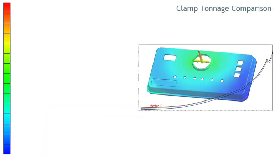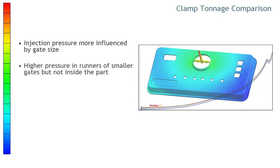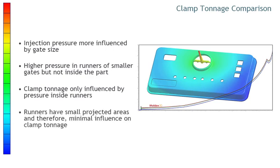Why are we seeing this behavior? Injection pressure behavior for the three examples is more influenced by gate size. The pressure in the runner is much higher inside the smaller gates, but not inside the part. If the pressure during filling is not actually different inside the part, the clamp tonnage is only influenced by the pressure inside the runner. And since the runner has a small projected area, the clamp tonnage behaviors are similar.